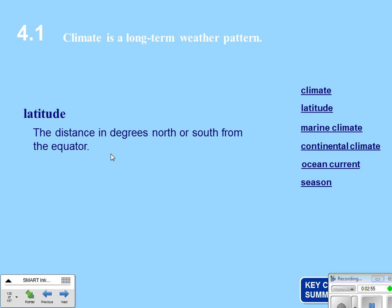Latitude is the distance in degrees north or south of the equator. The equator is zero degrees latitude. Going north, the north pole is 90 degrees. Going south of the equator, the south pole would also be 90 degrees. So the further away you are from the equator, the higher your latitude number will be.